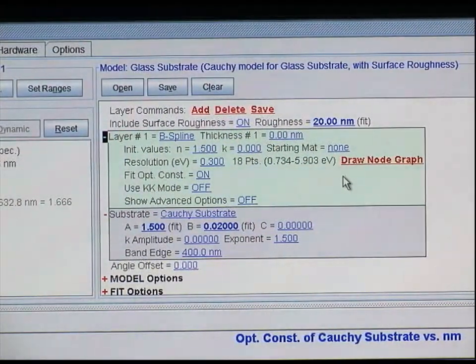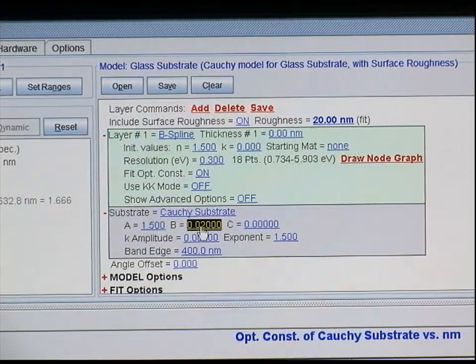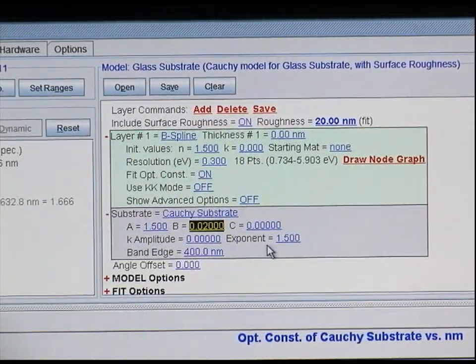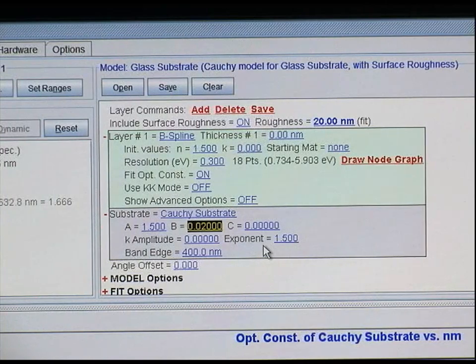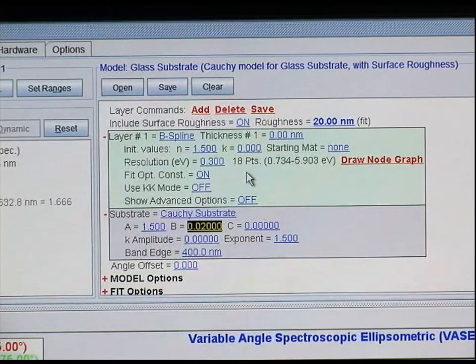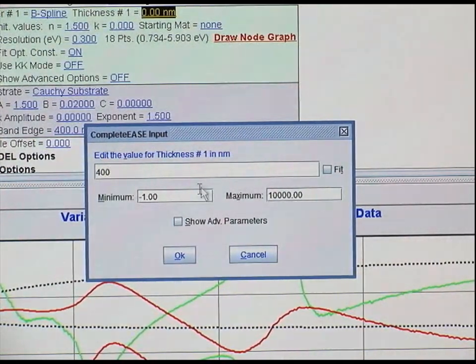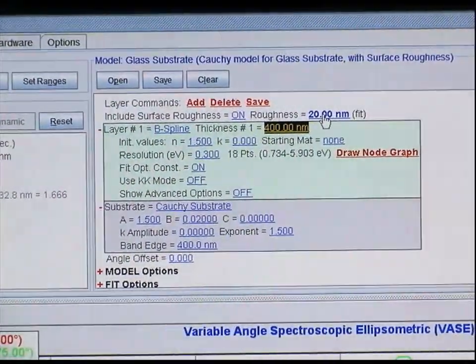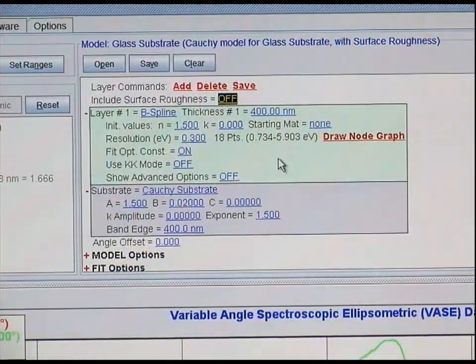That will be representative of our material of interest, our absorbing film that we just measured. Before we model the absorptive film, we first want to maintain our optical constants for our glass because that didn't change in our new measurement. Upon starting to model our material layer, we want to start with what we think would be an approximate thickness. In this case, I think the thickness is around 400 nanometers. That might be a good starting point. I'm also going to set the surface roughness to zero and turn that off entirely to make our fit appear much better.